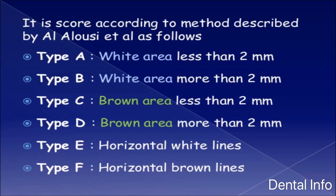The mottled enamel types are: Type A — white area less than 2 mm; Type B — white area more than 2 mm; Type C — brown area less than 2 mm; Type D — brown area more than 2 mm; Type E — horizontal white lines; Type F — horizontal brown lines.